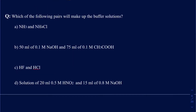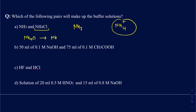Let's look at some examples to see which pairs will make up a buffer solution. The first example is NH3 and NH4Cl. NH3 is a base. The conjugate acid of NH3 is found by adding a proton, which gives NH4+. The question is: do you have NH4+ in solution? Ammonium chloride breaks into ions as NH4+ and Cl−. So you have the base NH3 and its conjugate acid NH4+. Since you have both, this will create a buffer solution.